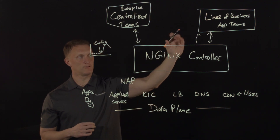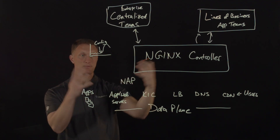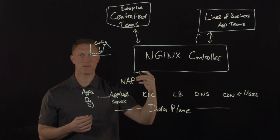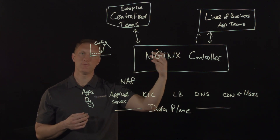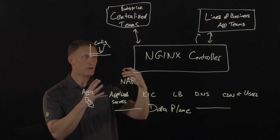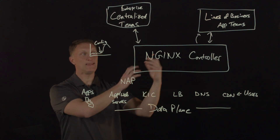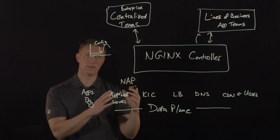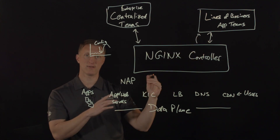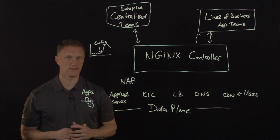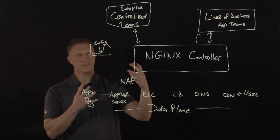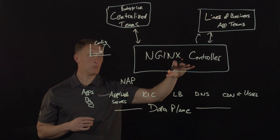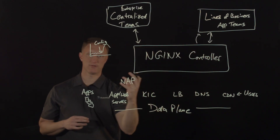A key component of this feedback loop is that it is app-centric. By app-centric, I mean that application teams can only see the security incidents or security violations relevant to their own applications. They can make changes using the self-service model, and those changes are not going to impact any other app teams or any other applications — only their specific application.